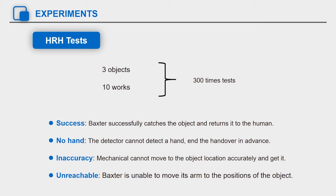Inaccuracy: the robot cannot move to the object's location accurately and get it. Unreachable: Baxter is unable to move its arm to the position of the object.